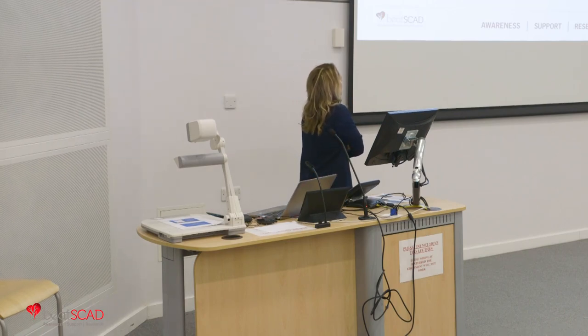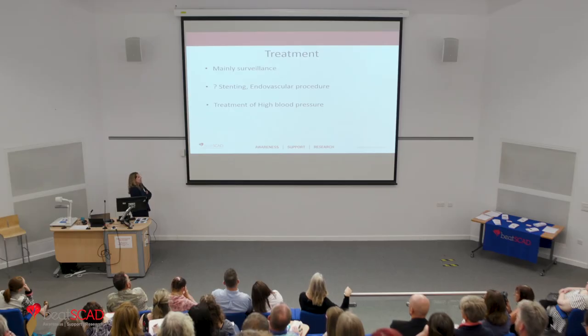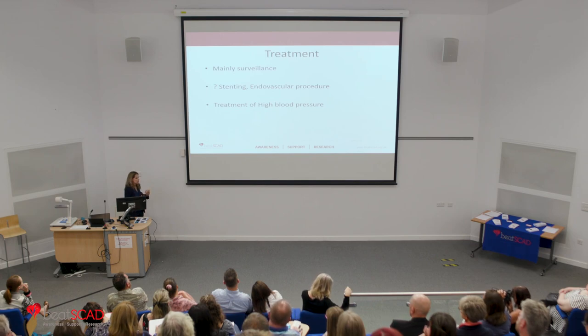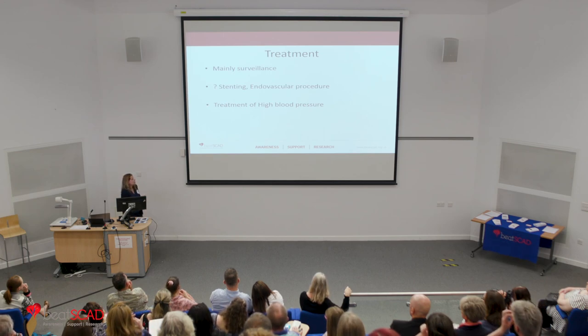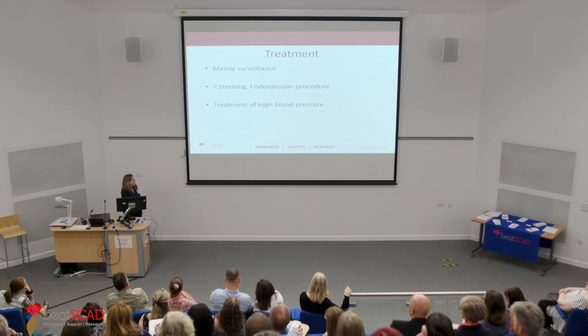The main treatment for FMD is largely surveillance. Reports of stenting or surgery for FMD have shown a higher degree of complications compared to atherosclerotic vessel narrowing. We stay on the side of surveillance unless there is reduced flow to an organ or a complication such as dissection. The mainstay is treating high blood pressure — if a patient has both hypertension and FMD, their risk of developing aneurysms and dissections is much higher, so we aim for lower blood pressure targets to reduce the risk of further complications.